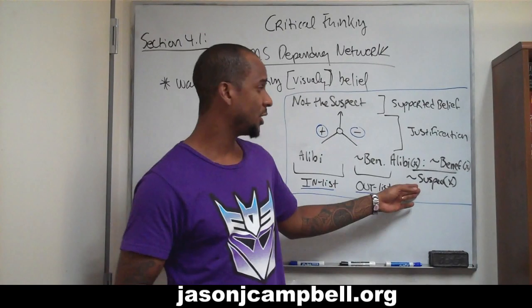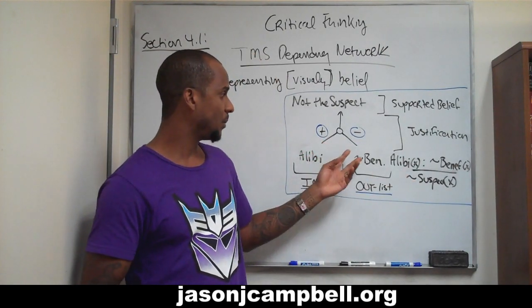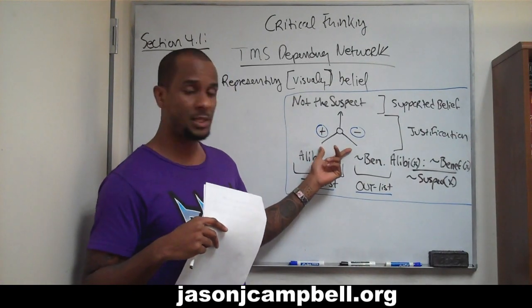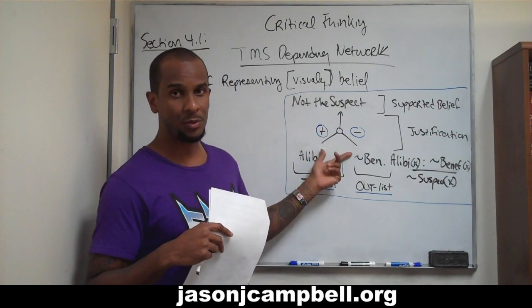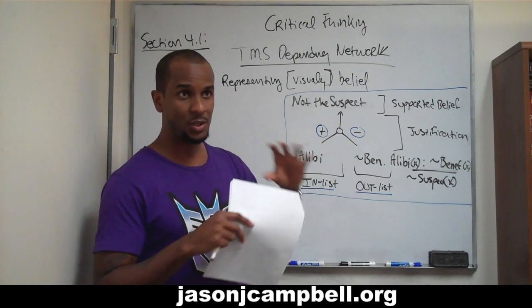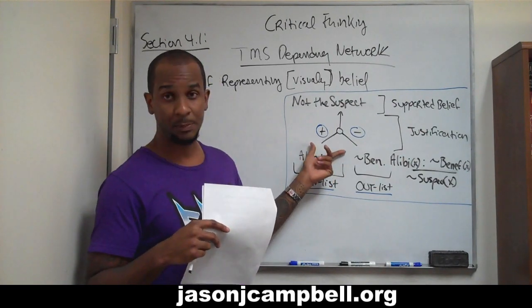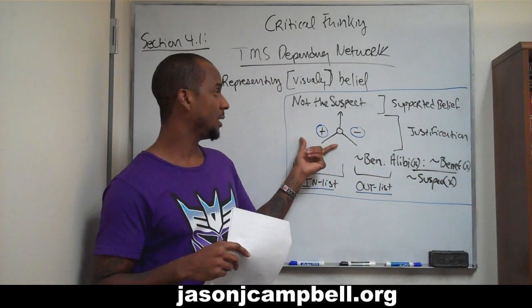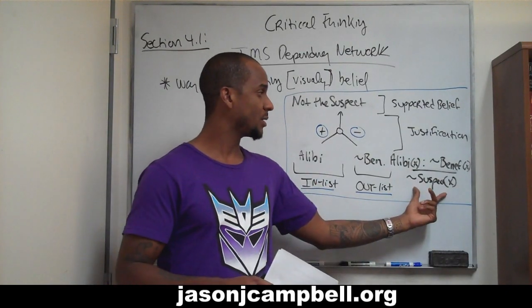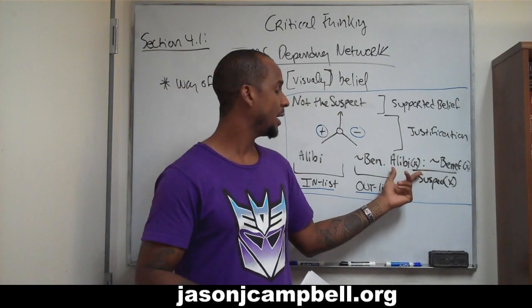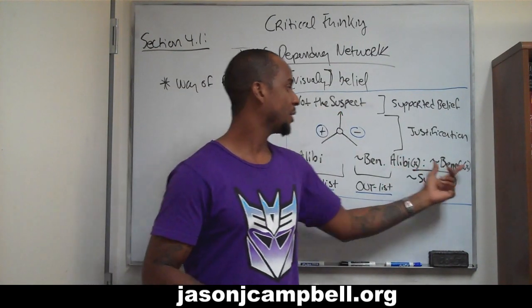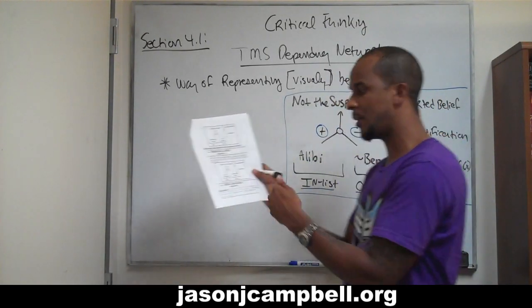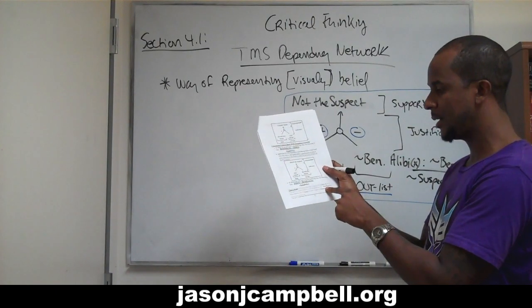The way it's represented in the default logic — that's what I wanted to show. There is an undeniable, inextricable biconditional relationship between the dependency network of a justification-based truth maintenance system and the corresponding default logic. The default logic and the JTMS are interchangeable. Here's where the supported belief is, here's the in-list, here's the out-list which justifies the supported belief. If it is provable that X has an alibi...